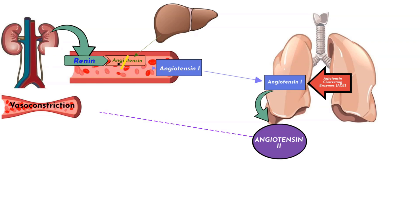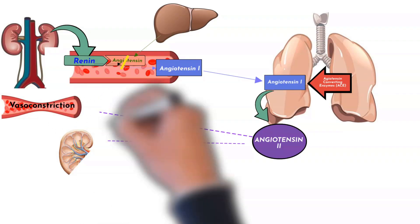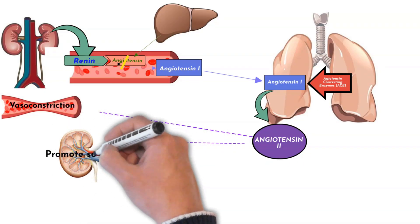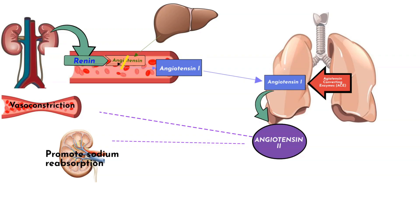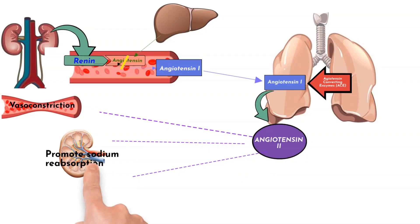In the kidneys, angiotensin-2 promotes sodium reabsorption. If there is sodium reabsorption, water retention will follow, because where sodium goes, water goes. More water means more plasma volume. More plasma volume will cause increased venous return, which would increase blood pressure by the Frank-Starling mechanism.